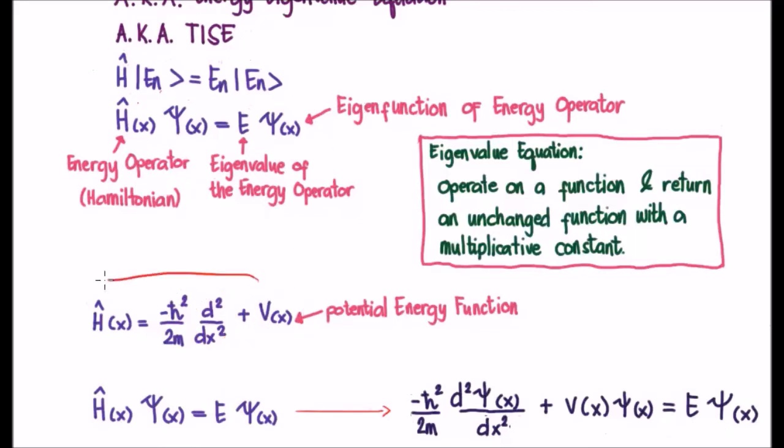So basically this is our Hamiltonian energy operator, the instruction to calculate the energy of your system. And it acts on either your ket or your wave function, or in different language it acts on your eigenfunction, your eigenket, or your eigenstate.